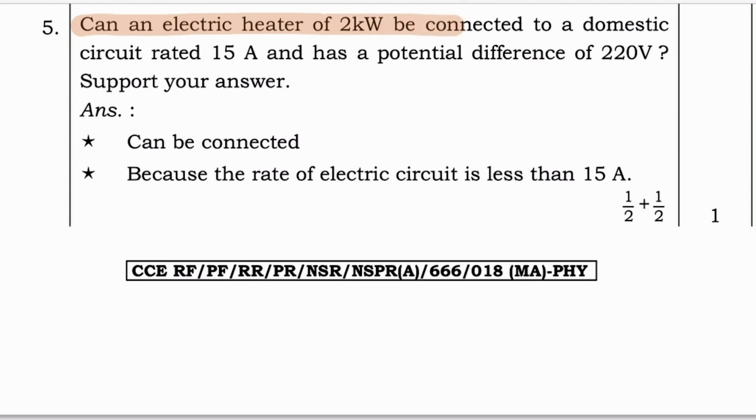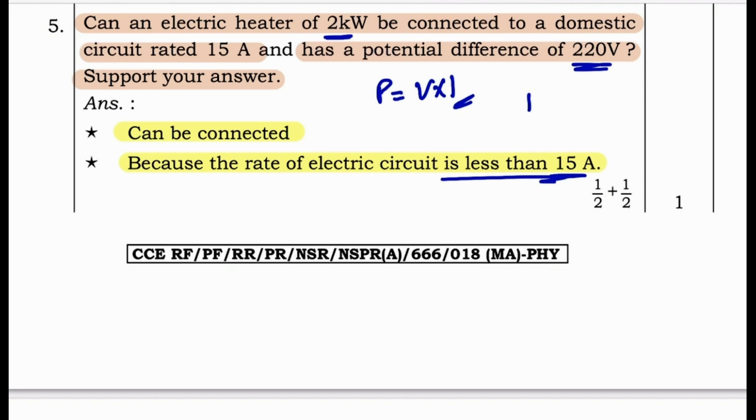Next question. Can an electric heater of 2 kilowatt be connected to a domestic circuit rated 15 ampere and has a potential difference of 220 volt? Support your answer. It can be connected because the rate of electric current is less than 15 ampere. So we need to know how it is less than 15 ampere. So for that we are going to apply electrical power formula which is P equals V into I. Where P is 2 kilowatt means 2000 watt and V is 220 volt. So I equals P by V then 2000 watt divided by 220 volt which will be 9.1 ampere. So since 9.1 ampere is less than 15 ampere it can be connected.